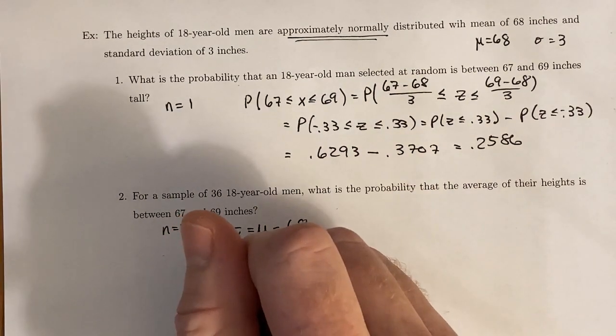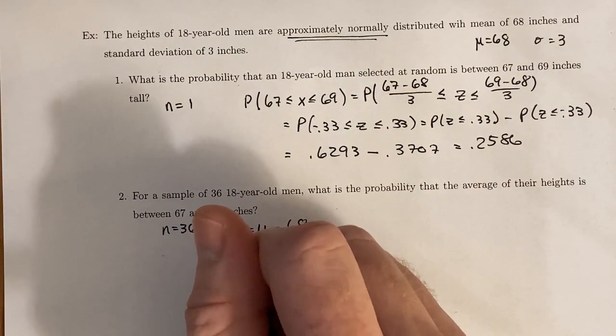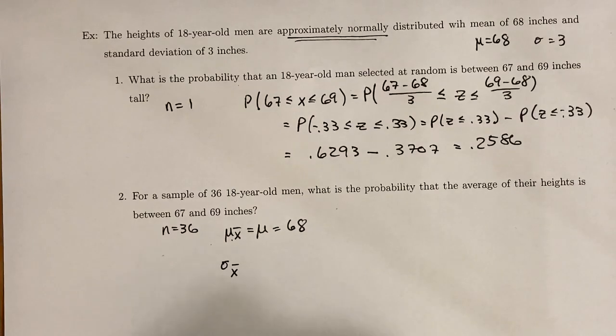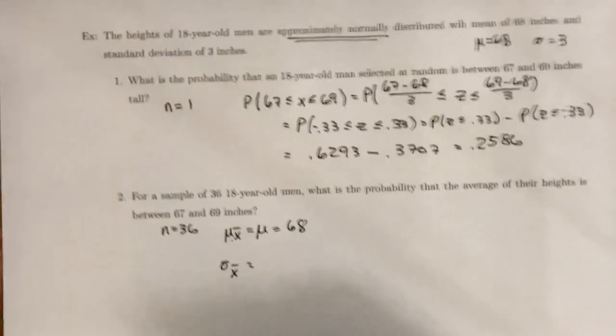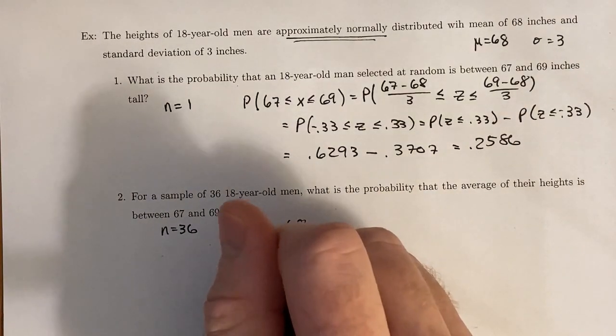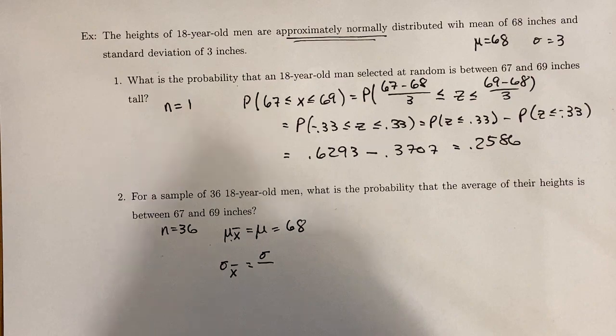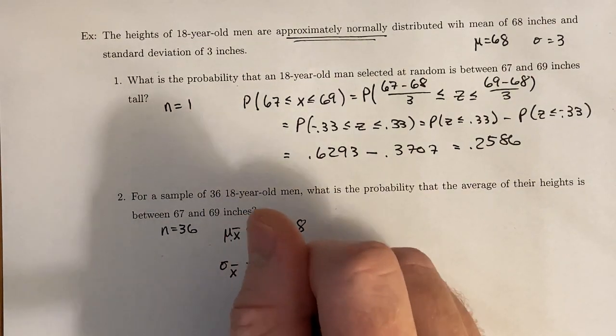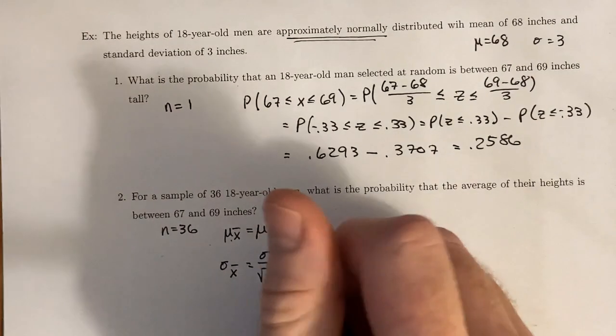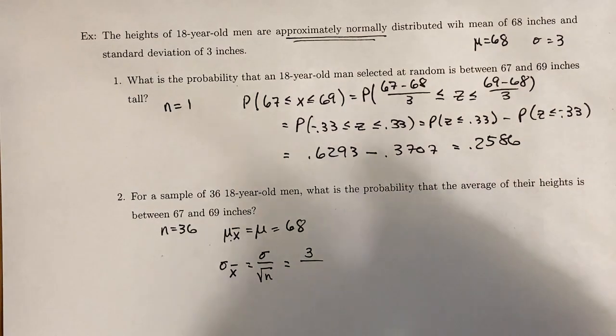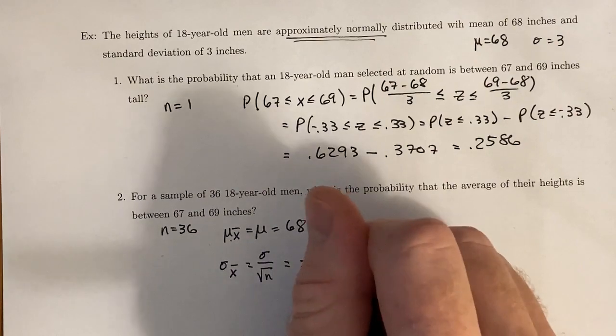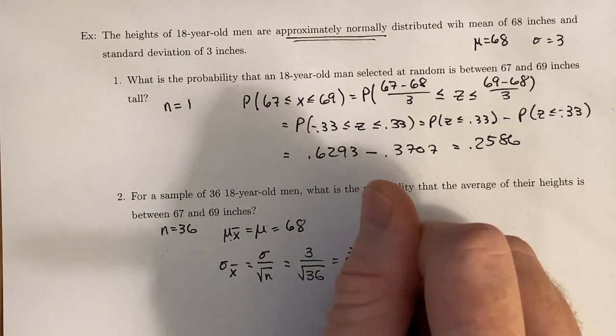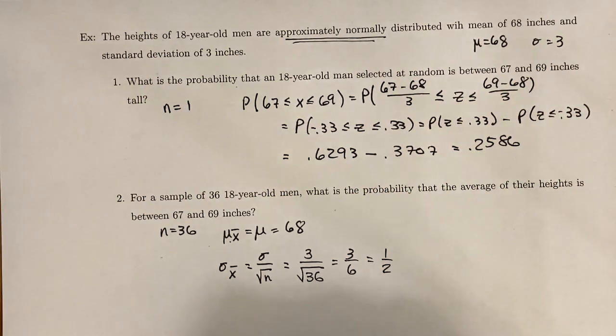And the standard deviation of the sampling mean, the sampling distribution of the sampling mean, or the standard error for short, is equal to the population standard deviation divided by the square root of n. So in this case, our standard deviation was 3. Our sampling size is 36. So that gives us 3 over 6, which gives us 1 half.